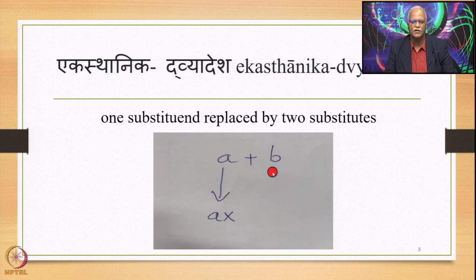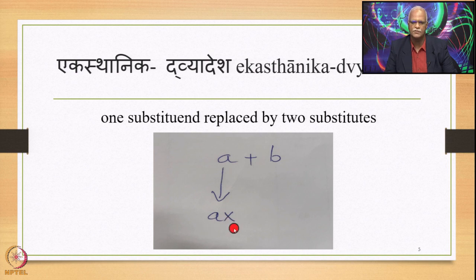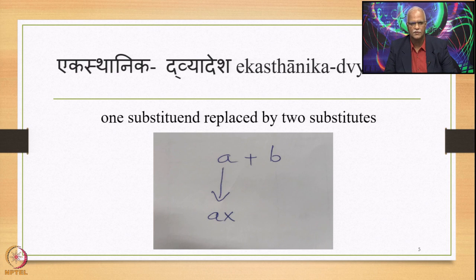In this environment, A plus B: they are in the Samhita mode where B follows A immediately. In this environment, A gets substituted by A-X. So there are two substitutes and one substituent. This is Ekasthanika Dvyaadesha — the diagrammatical representation.